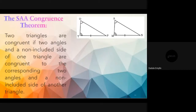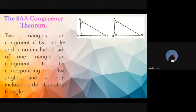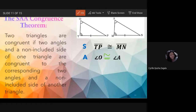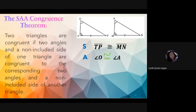Based on the markings, Labano answers: side TP is congruent to side MN. Sagala answers: angle O is congruent to angle A. Bautista answers: angle T is congruent to angle M.